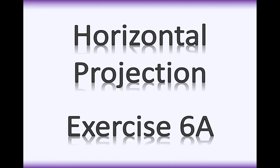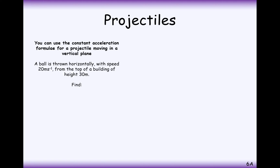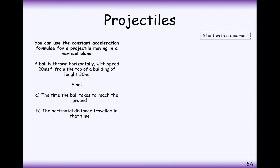Hello there and welcome to the series of videos going through the content of A-Level Maths. Here we're looking at horizontal projections so we can answer questions from exercise 6a. Basically what we're going to be doing here is two-dimensional SUVAT. In this case we have a ball at the top of a 30-metre tall building and it has an initial speed to the right-hand direction of 20 metres per second.